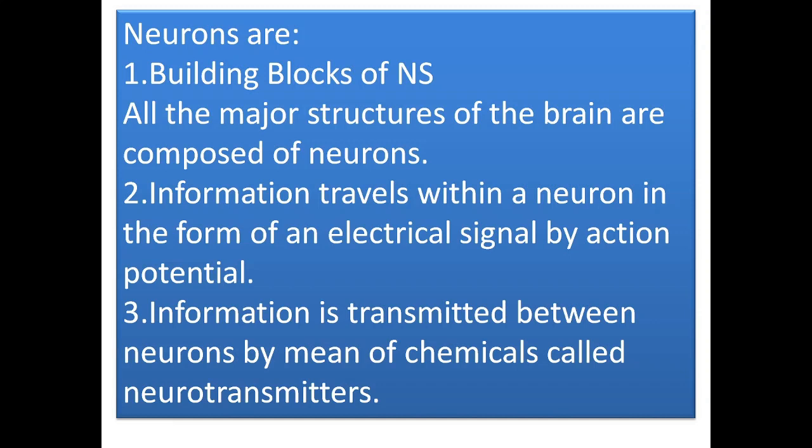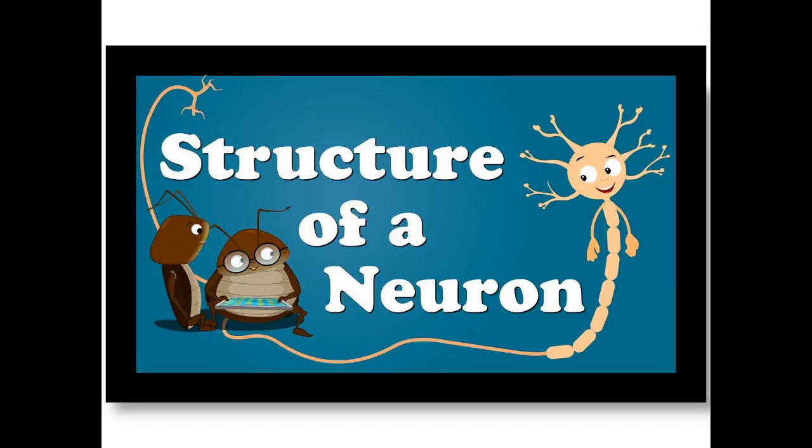Information travels within a neuron in the form of an electrical signal by action potential, and information is transmitted between neurons by means of chemicals called neurotransmitters.